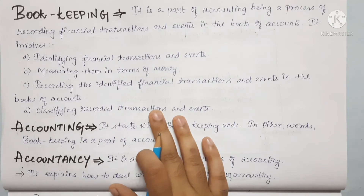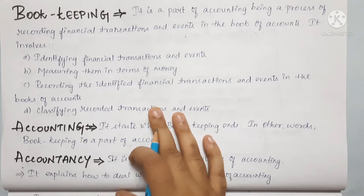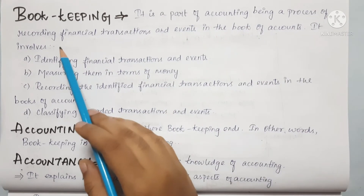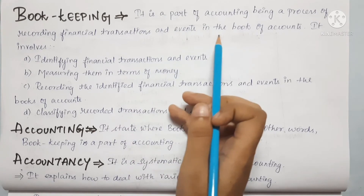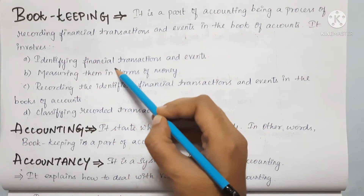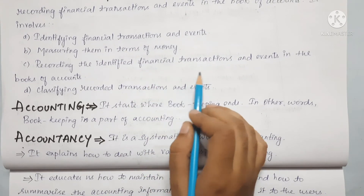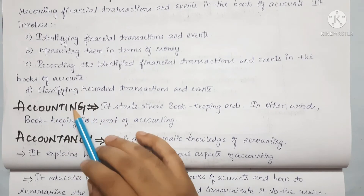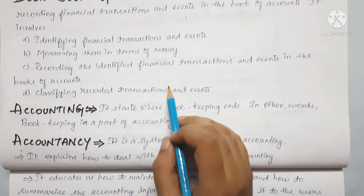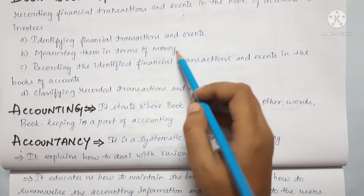We will discuss the next topic: Bookkeeping, Accounting, and Accountancy — and compare these three things. First, Bookkeeping. It is a part of accounting, being a process of recording financial transactions and events in the books of account. It involves identifying financial transactions and events and measuring them in terms of money.